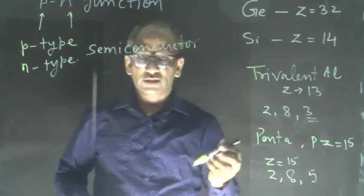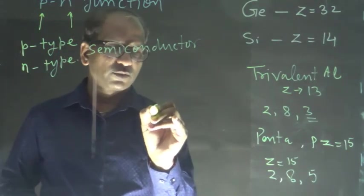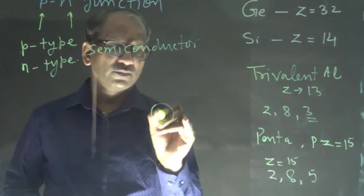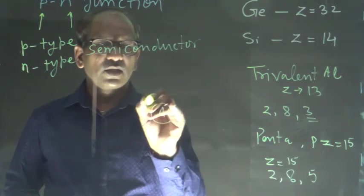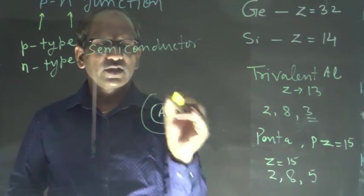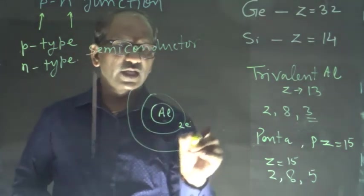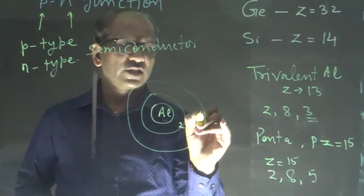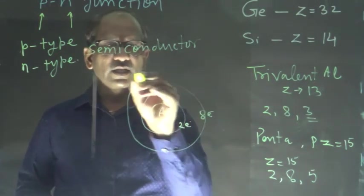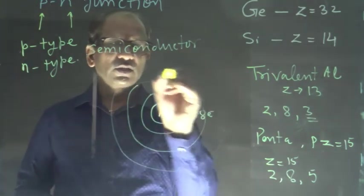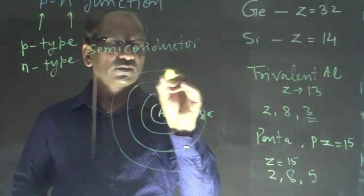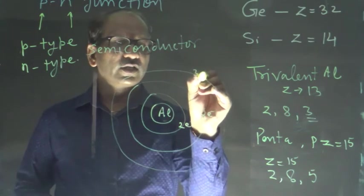So here, the atomic structure for the aluminum. This is aluminum. First shell, there are two electrons. Second shell, there are eight electrons. And the third one, there are only three electrons.